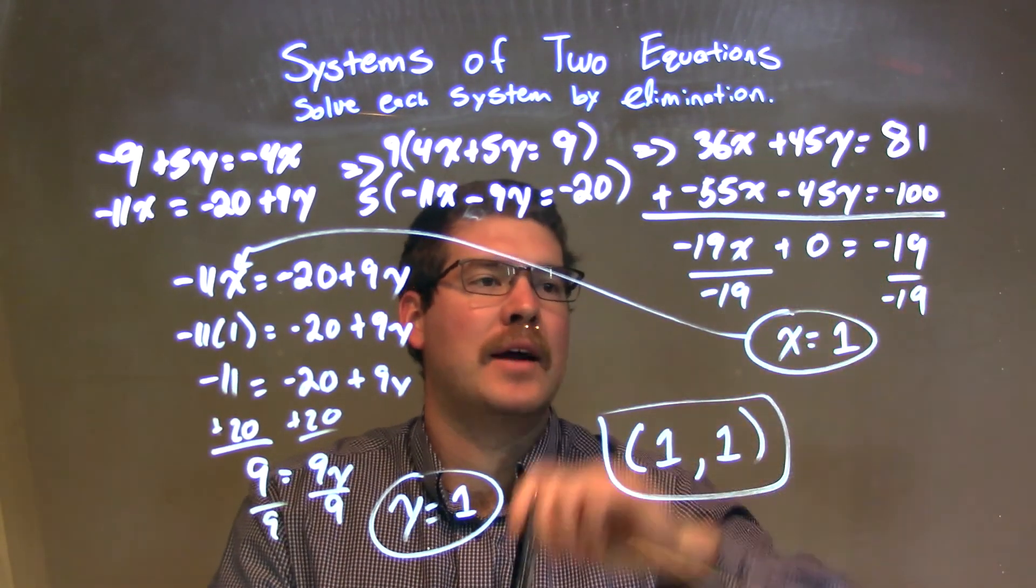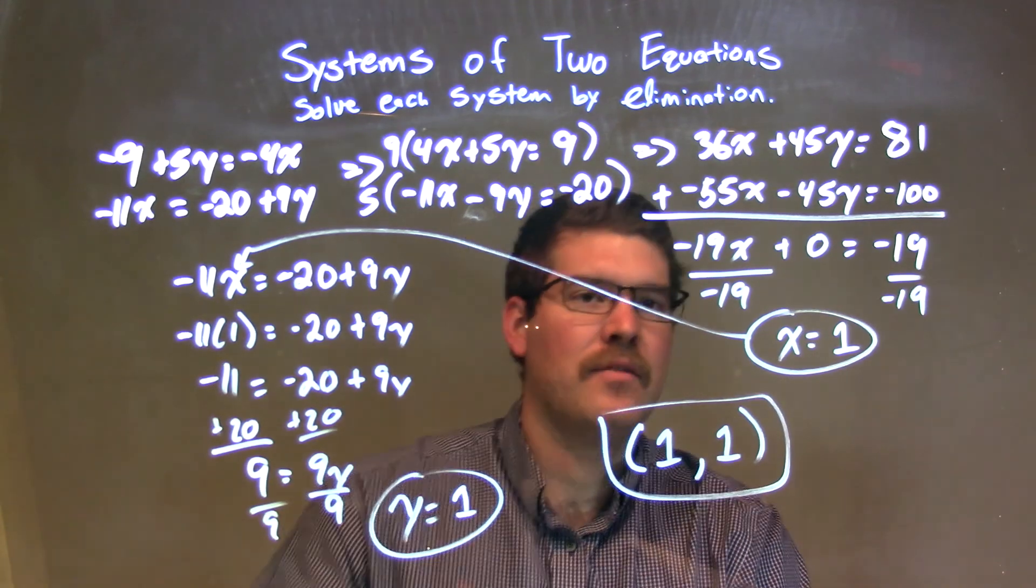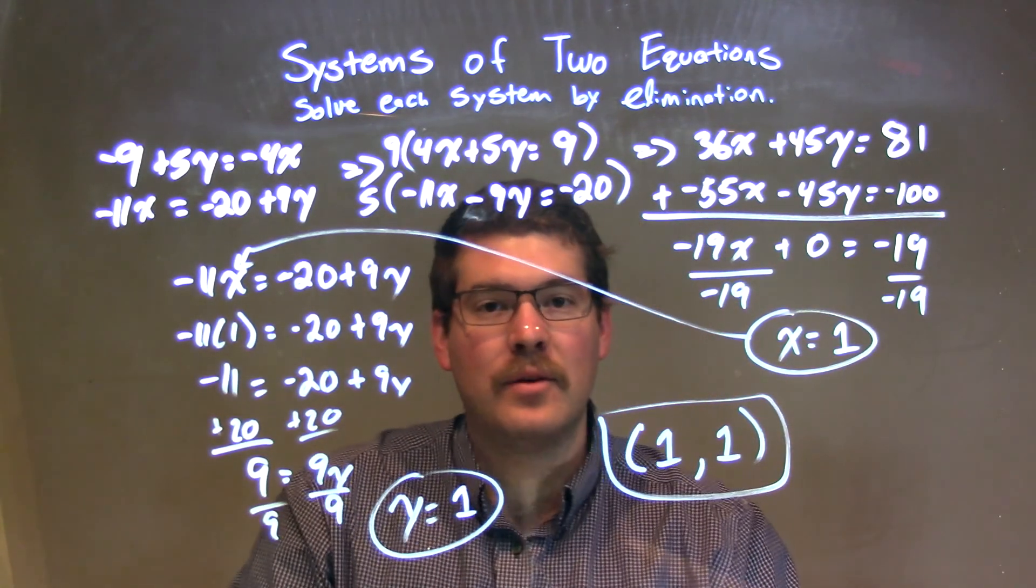I added the two equations together, eliminating the y, giving me negative 19x equals negative 19. Divided by negative 19 on both sides, x is by itself and equals 1.